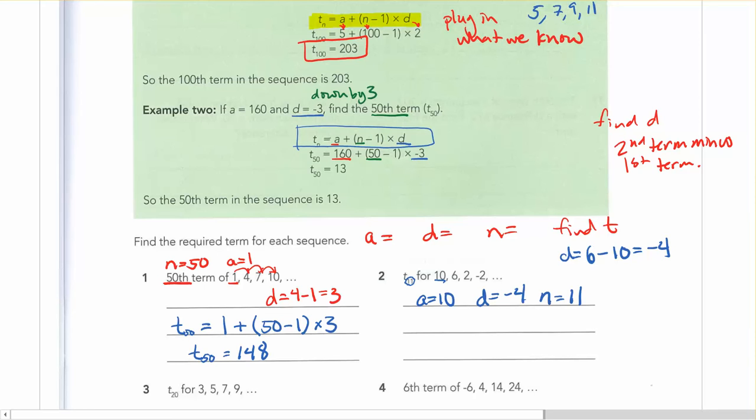So using our blanket formula again, t sub 11, because that's what we're looking for, is going to be equal to the first term, which is 10, plus bracket n, well, we want the 11th term, so 11 minus 1 bracket times d, which is negative 4.